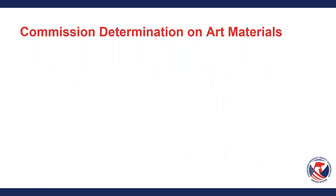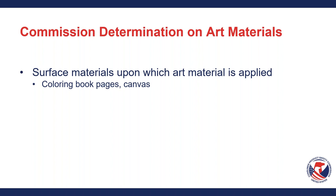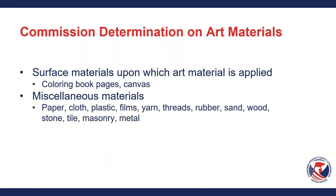The determination also covers surface materials upon which art material is applied — like coloring book pages and canvases — as well as miscellaneous materials such as paper, cloth, plastics, film, yarn, threads, rubber, sand, wood, stone, tile, and metal. However, enforcement may occur if exposure to a chemical is possible during foreseeable use. For example, if a canvas is primed with a chemical that consumers could be exposed to during normal use, chronic hazard review would be required.